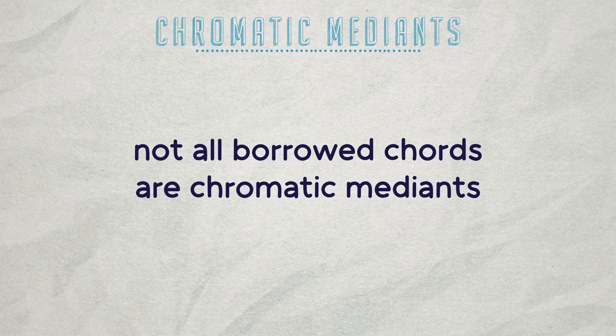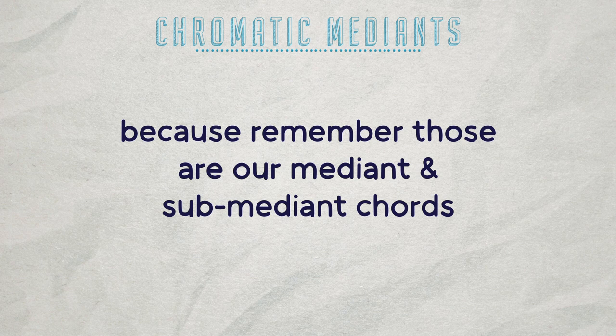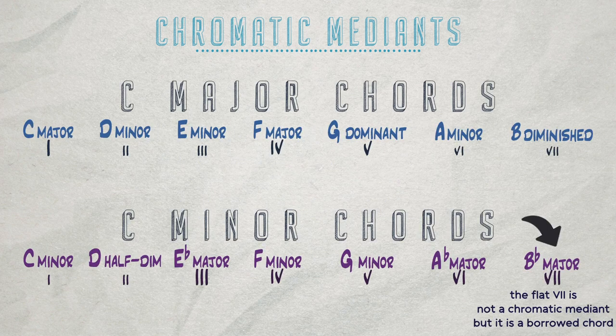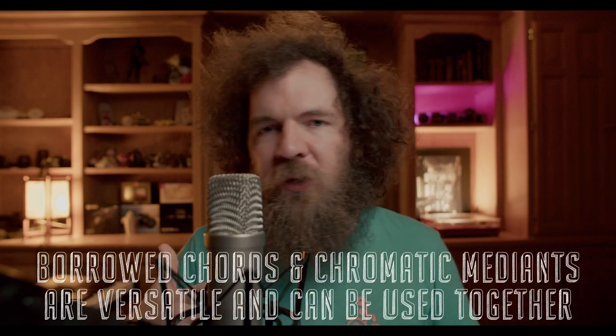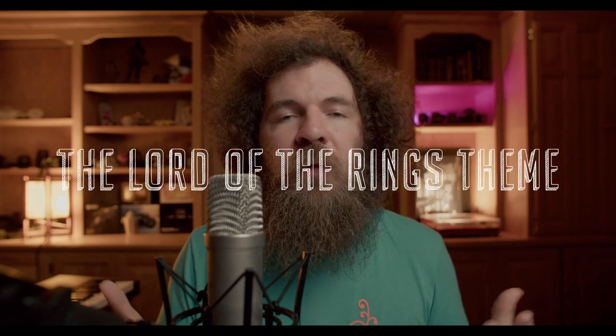Not all of the chords in the parallel minor are chromatic medians. Only the three and the six chord are chromatic medians, because those are our mediant and sub-mediant chords. For example, in the minor key, the flat seven is not a chromatic mediant, but it is a borrowed chord. They can both be used in composing and concurrently in progressions. You will see both oftentimes in the same piece of music, which brings us to our next section where we're going to look at a real-world example — the Lord of the Rings theme.